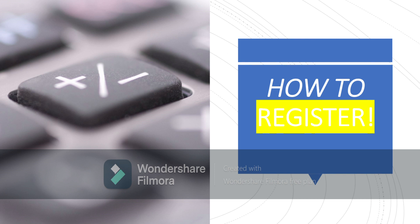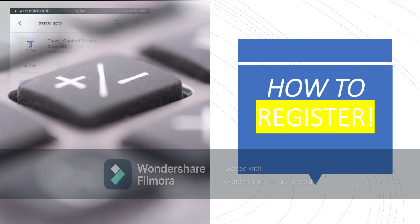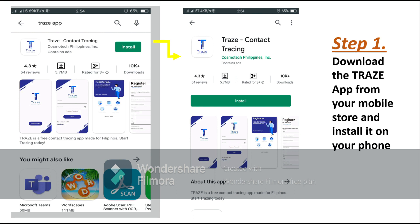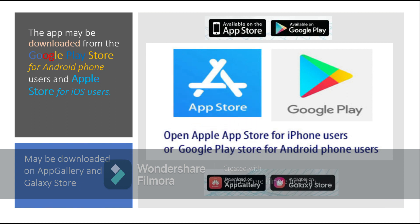How to register — Step 1: Download the Trace app from the mobile store and install it on your cellphone. For Android users, the application may be downloaded from Google Play. For iOS users, the application may be downloaded from the Apple Store. The application can also be downloaded using the App Gallery and Galaxy Store.